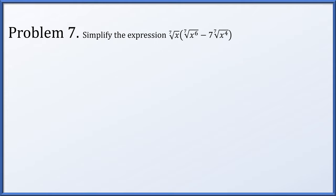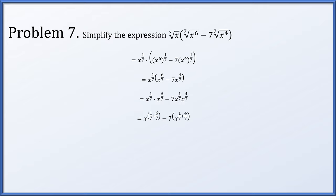In problem 7, simplify the expression 7th root of x times the quantity 7th root of x to the 6th minus 7 times the 7th root of x to the 4th. Switching to fractional exponents: x to the 1/7 times x to the 6/7 minus 7 times x to the 4/7. Distributing x to the 1/7 and adding exponents, x to the 1/7 times x to the 6/7 gives x to the 7/7, which is x to the 1st, and x to the 1/7 times x to the 4/7 gives x to the 5/7. So the result is x minus 7 times x to the 5/7, or equivalently x minus 7 times the 7th root of x to the 5th.